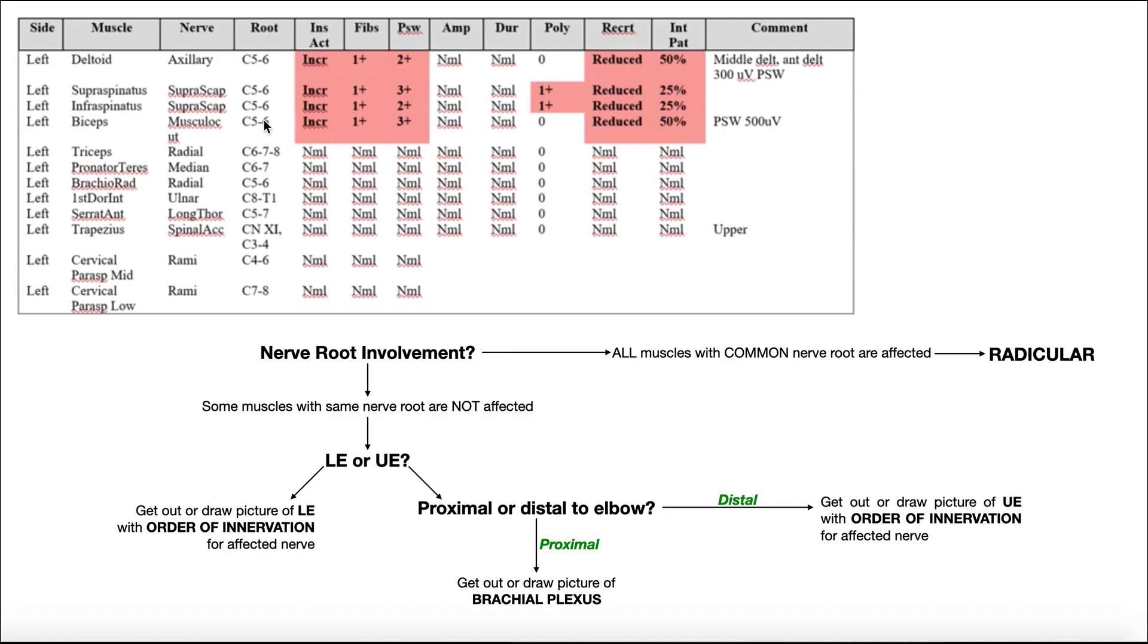pronator teres also has C6. It's not affected. Brachioradialis also has C6. It's not affected, and you can make this argument all the way down. So most likely in this case, it's not radicular.